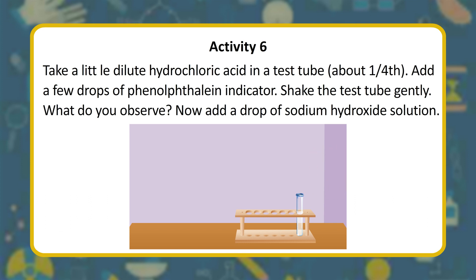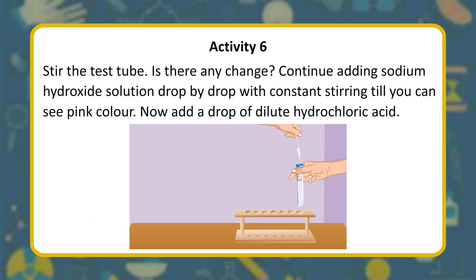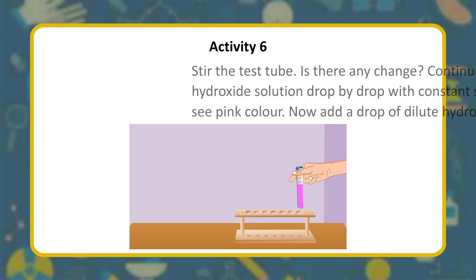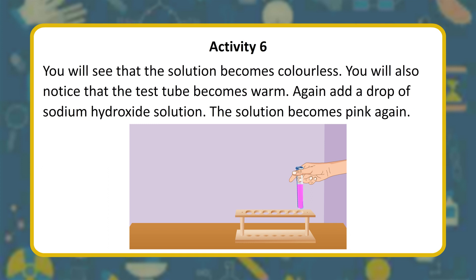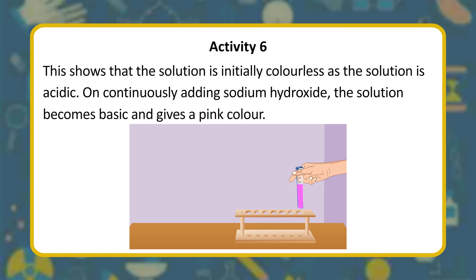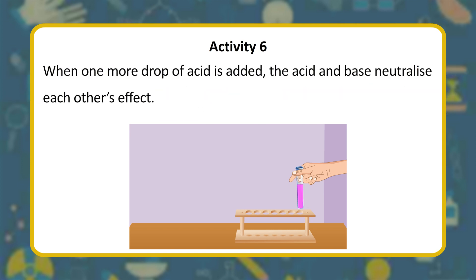Activity: take dilute hydrochloric acid in a test tube and add a few drops of phenolphthalein indicator. Shake gently — the solution is colorless as it is acidic. Add sodium hydroxide solution drop by drop with constant stirring until you see a pink color. Now add a drop of dilute hydrochloric acid — the solution becomes colorless again and the test tube becomes warm. Add another drop of sodium hydroxide — the solution turns pink again. This shows that when acid and base are added, they neutralize each other's effect.